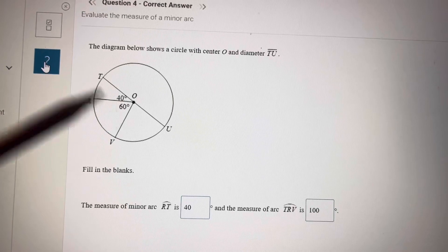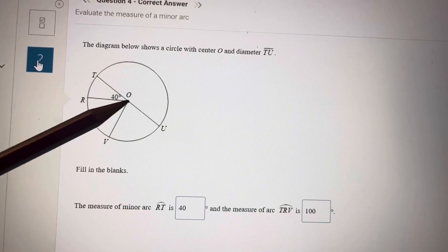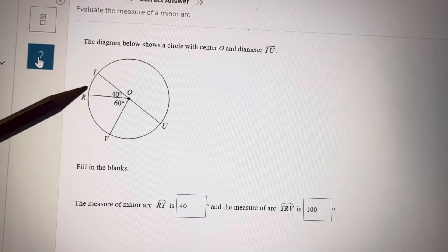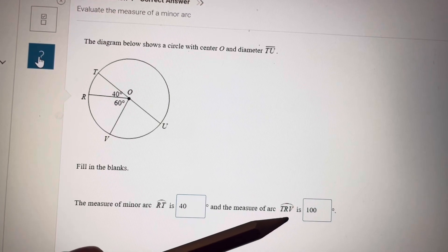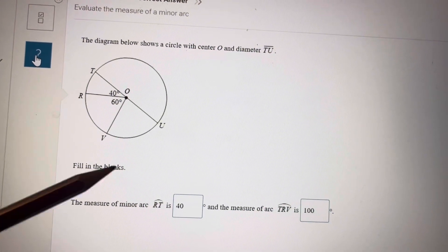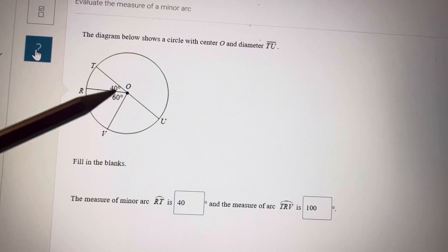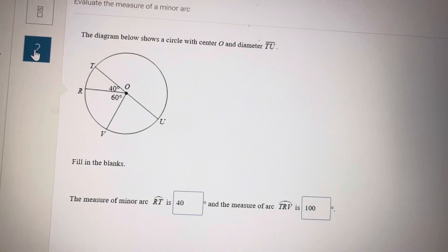In this circle, he wants the measurement of arc RT. Arc RT is equal to the central angle, which is 40. The measurement of TRV. TRV. This arc is equal to central angle, which is 40 plus 60, 100.